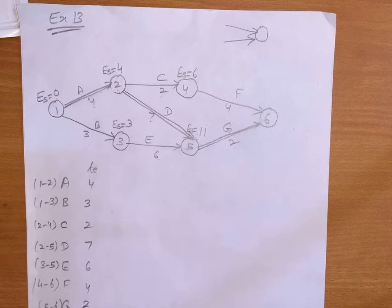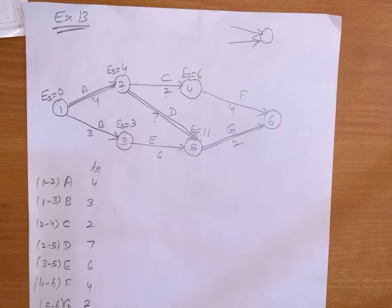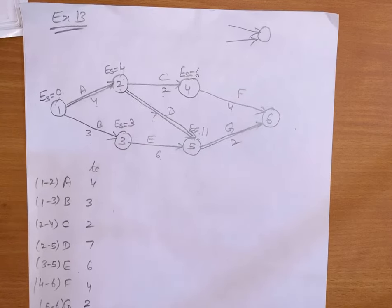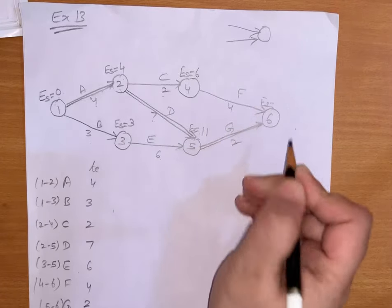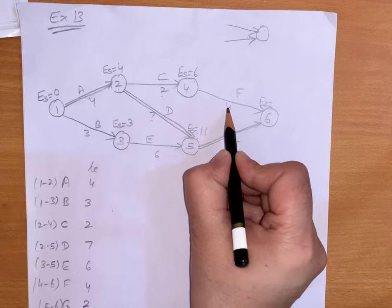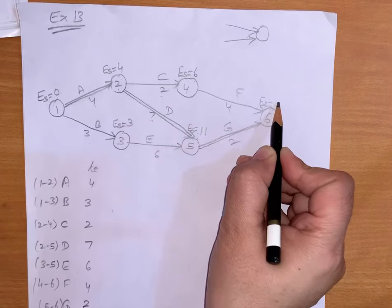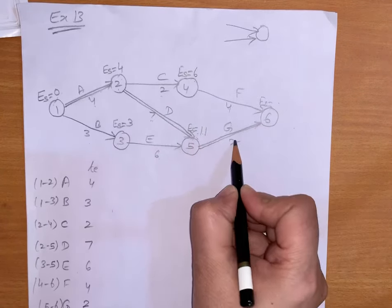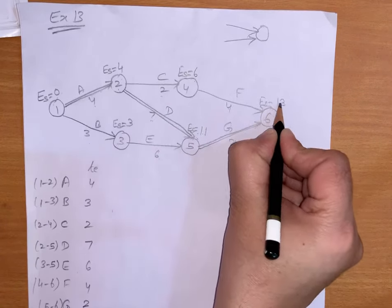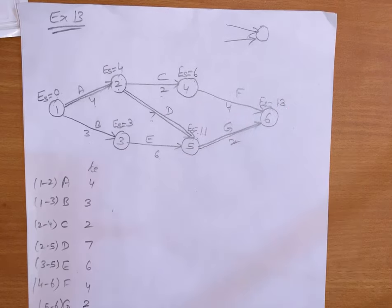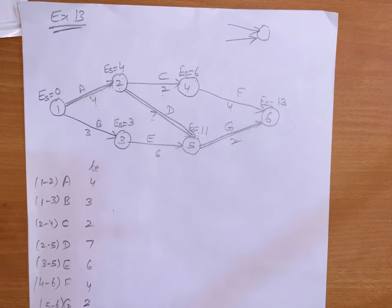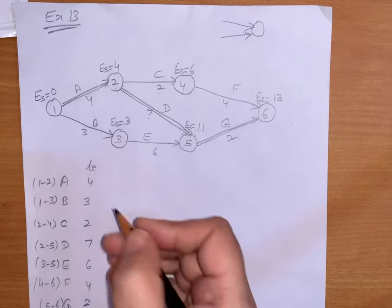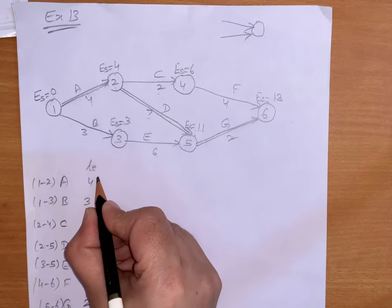So whenever there is an event where two activities are merging, we will take the longest path. Now for event 6, again the same — we have two options: 6 plus 4 equals 10, and 11 plus 2 equals 13. We will go for the longest one, which is 13. So we have calculated earliest start for every event.